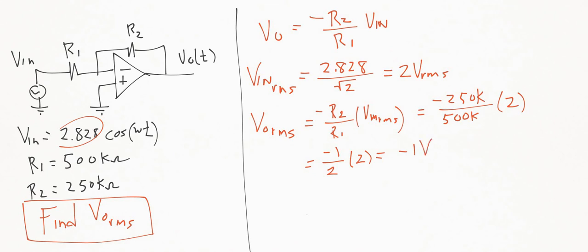But because this is an RMS meter that's reading the output voltage here, RMS stands for root mean squared. So you can't have any negative values. So we will just drop the negative here,